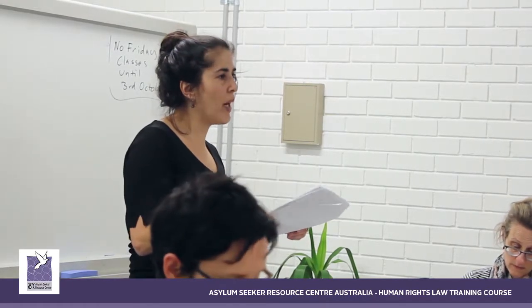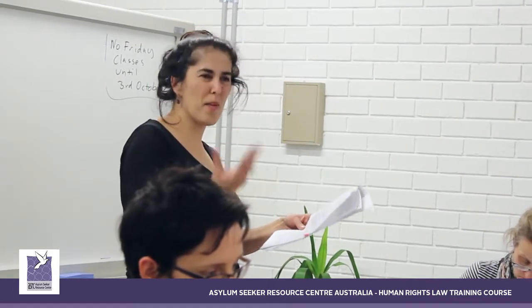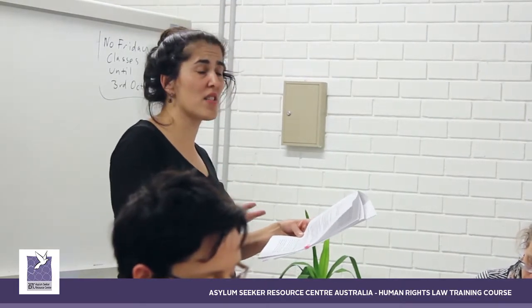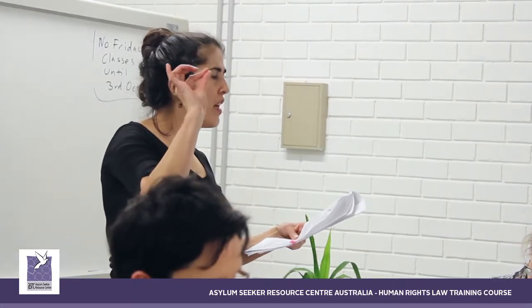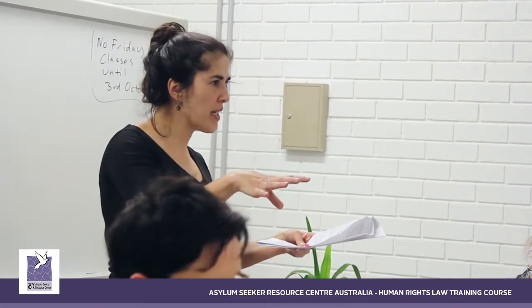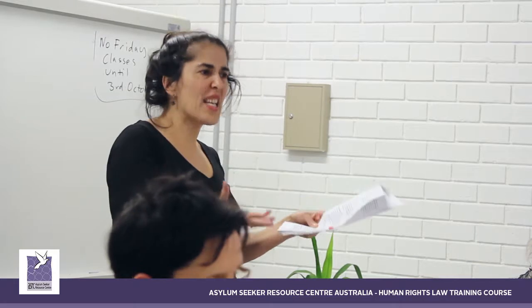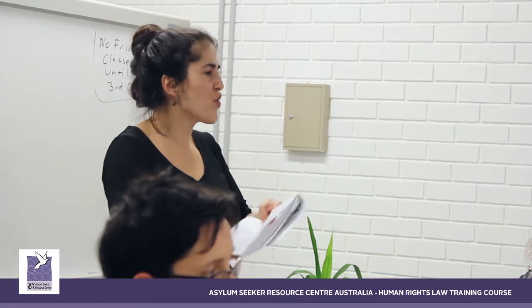Section 91.3 - if you find that the applicant has made a claim or engaged in conduct for the purpose of strengthening their case, that conduct can be disregarded. Important to know for this part of the process and the earlier parts Kong has spent time on - in case you have a new type of claim, like a religious claim or conversion while in Australia. You should be aware of that provision.